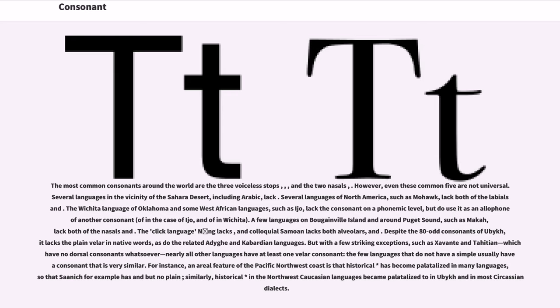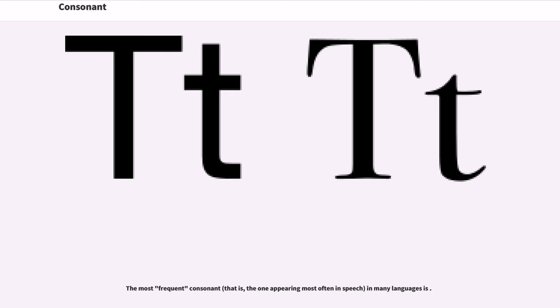Similarly, historical /k/ in the Northwest Caucasian languages became palatalized to /kʲ/ in Ubykh and most Circassian dialects. The most frequent consonant, that is, the one appearing most often in speech in many languages, is /n/. The following are consonant charts with links to audio samples.